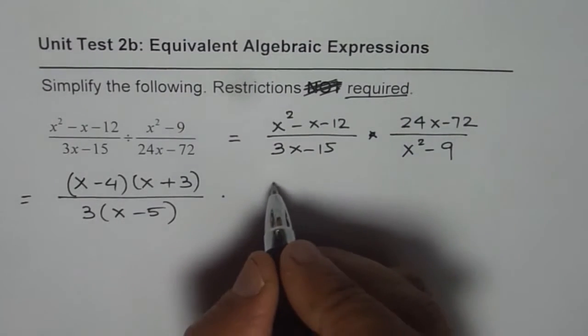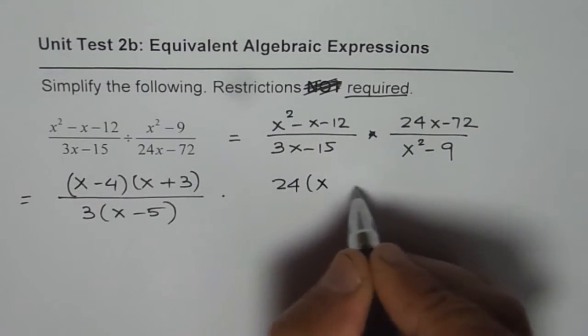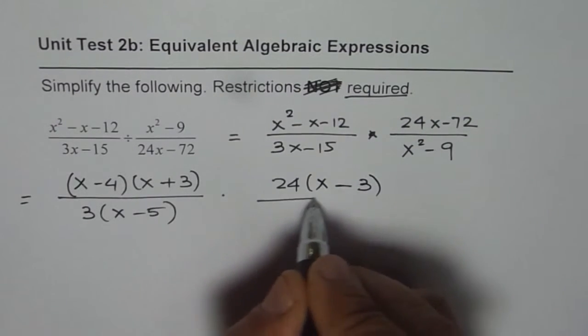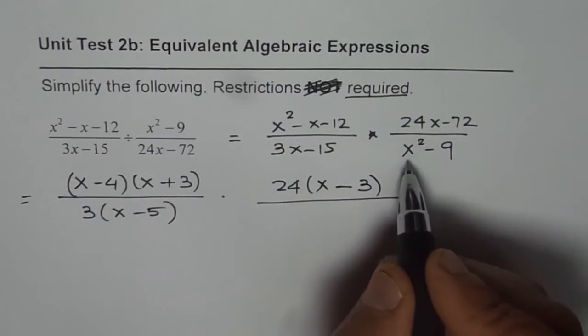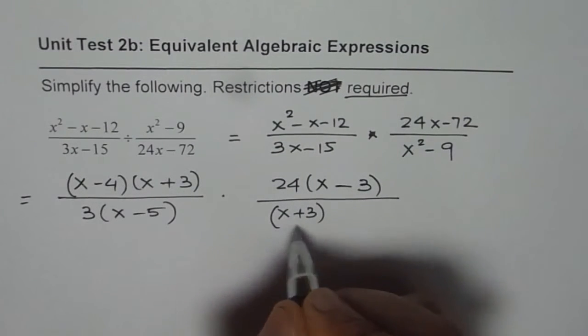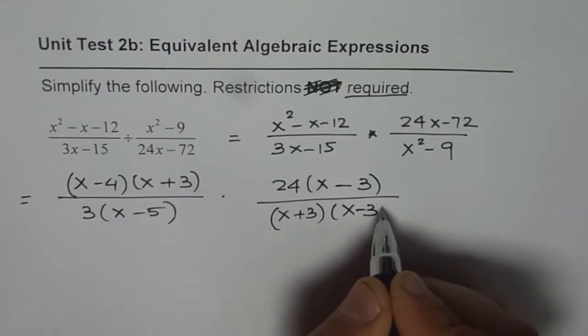Now, 24 is a common factor, we can write 24 times x minus 3, 3 times 24 is 72. This is a squared minus b squared type. So, we can write this as x plus 3 times x minus 3.